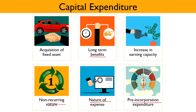The sixth criterion is Pre-incorporation Expenditure. Expenditure incurred prior to the incorporation of the company is also called capital expenditure. This may include expenditure incurred for establishing business such as cost of obtaining a license to start business, cost of patent, preliminary expenses, and purchase of goodwill. However, only the initial expenditure is capital expenditure, while a business license renewal fee is a revenue expenditure as it is recurring in nature.